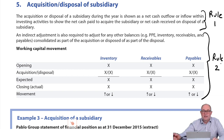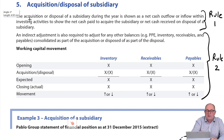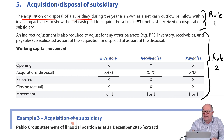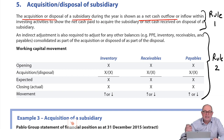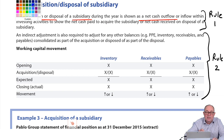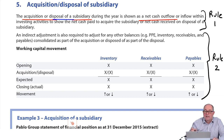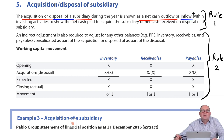Looking at the notes, you can see that the acquisition of a subsidiary is a net cash outflow. It also implies that the disposal of a subsidiary is a net cash inflow. So we need to understand exactly what we mean by those.